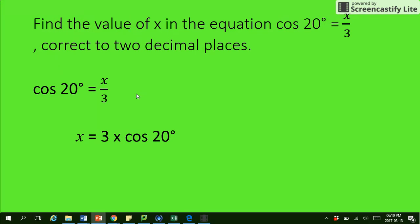Okay, so the cos comes over and it changes to a multiplication. And then in your calculator, you actually go 3 times cos 20. And you'll get the answer 2.82 because it was two decimal places.